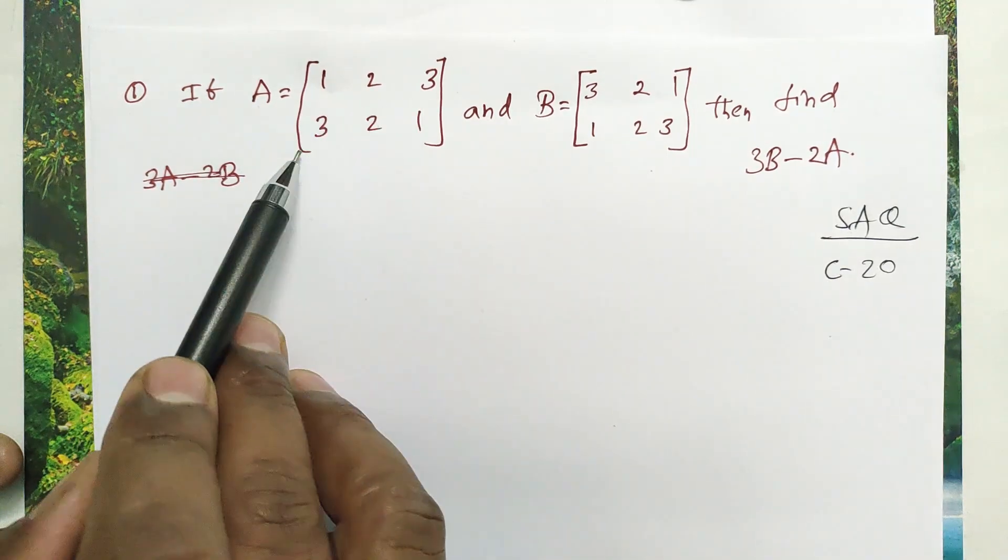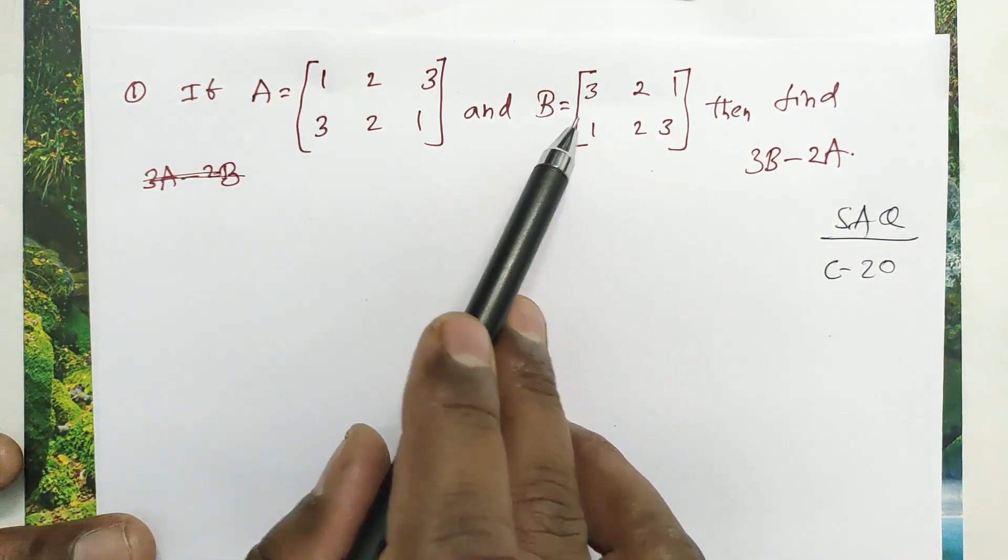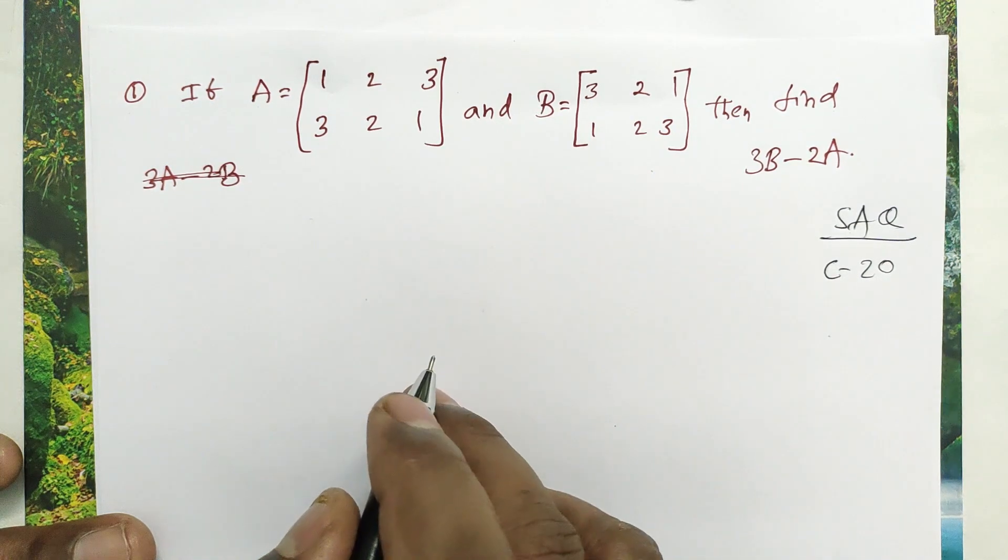If A equal to [1, 2, 3; 3, 2, 1] and B equal to [3, 2, 1; 1, 2, 3], then find 3B minus 2A.